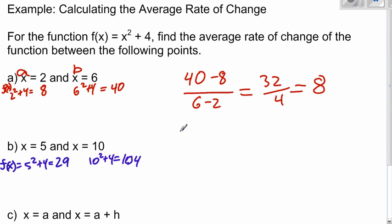So now plugging into our equation. Again, this would be a, this would be b for the equation. f of b minus f of a, 104 minus 29, over b minus a, 10 minus 5. So that's 75 over 5, which is 15.